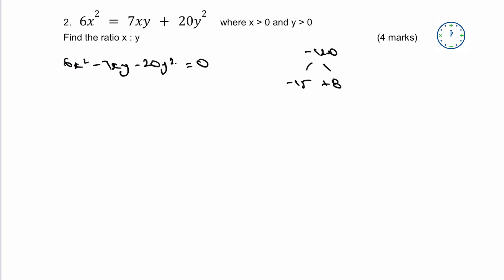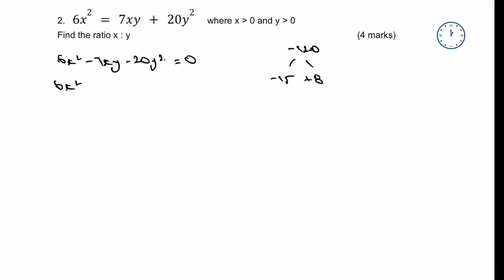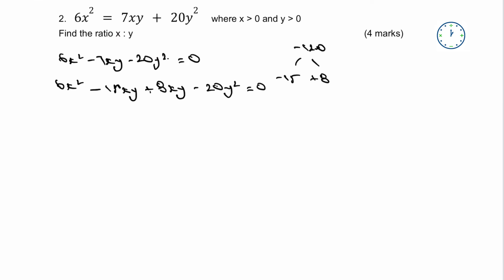Therefore, I can rewrite my equation in a slightly different way. I can write that as 6x². And then rather than writing my -7xy, I'm going to write that as -15xy, and that's going to be plus 8xy. And then I've got my -20y² equals zero.